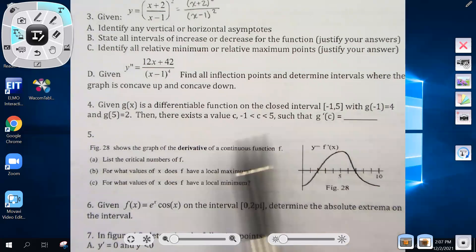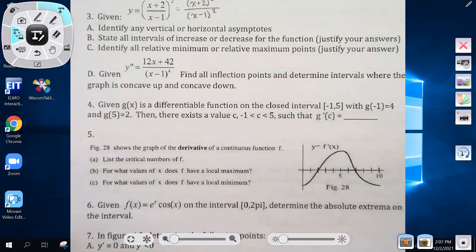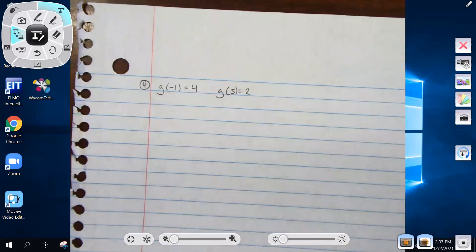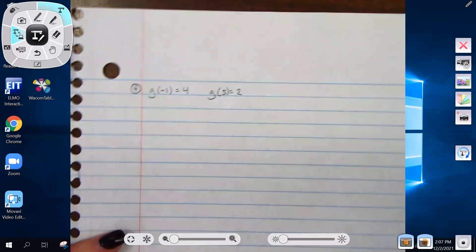There is a value c such that g'(c) equals the slope between the two points that we're given. We're given the two points: g(-1) = 4 and g(5) = 2.